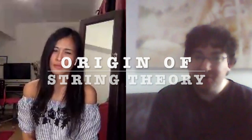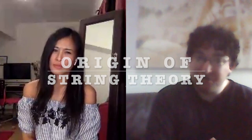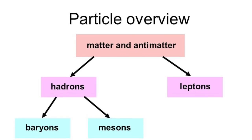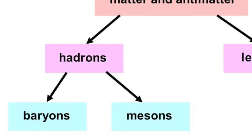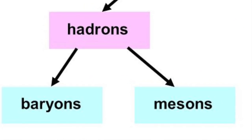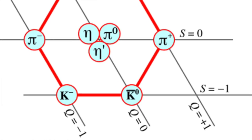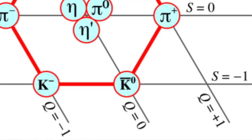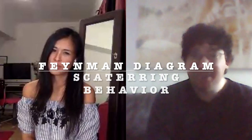String theory originally was not a theory of gravity — it was a theory of particles, specifically a class of particles known as hadrons, and particularly a type of hadron known as mesons. A meson is composed of two fundamental elementary particles known as quarks — one quark and one anti-quark — held together by the strong nuclear force. And people were really studying the scattering of these quarks.